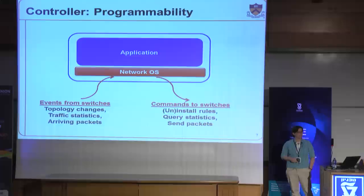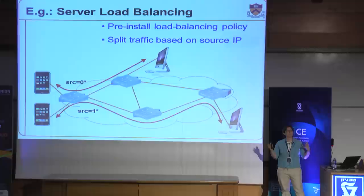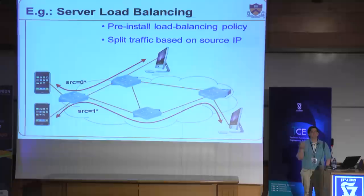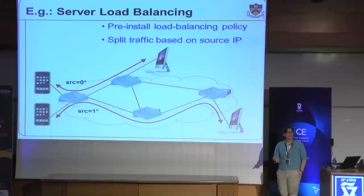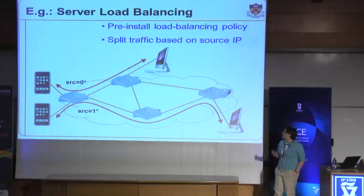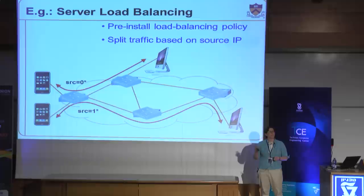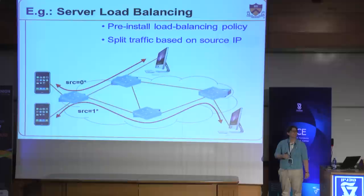Let me give two examples of applications running on OpenFlow. A simple server load balancer has two servers offering the same service with the same IP address. Today you'd buy a dedicated load balancer box — expensive, a single point of failure, and a single point of attack. With OpenFlow switches, you can install rules that split traffic going to the same destination to different instances of that service. Based on the client IP address, half the clients go to one server replica and the other half to the other, partitioning traffic between server replicas and obviating the need for a separate load balancer.